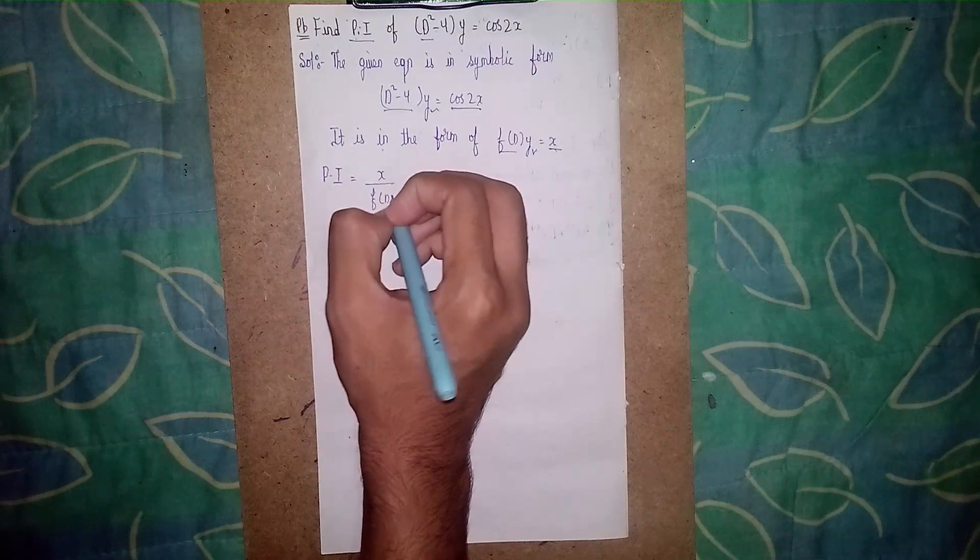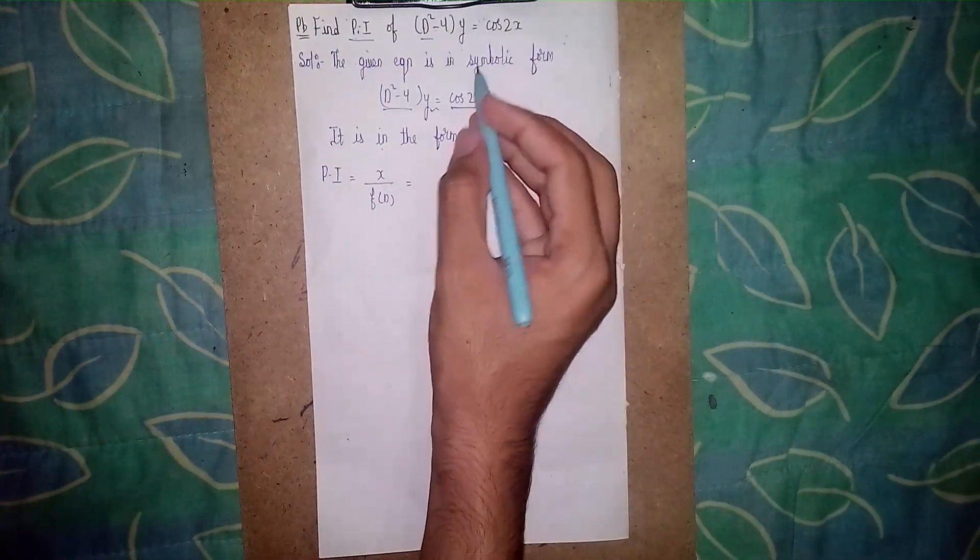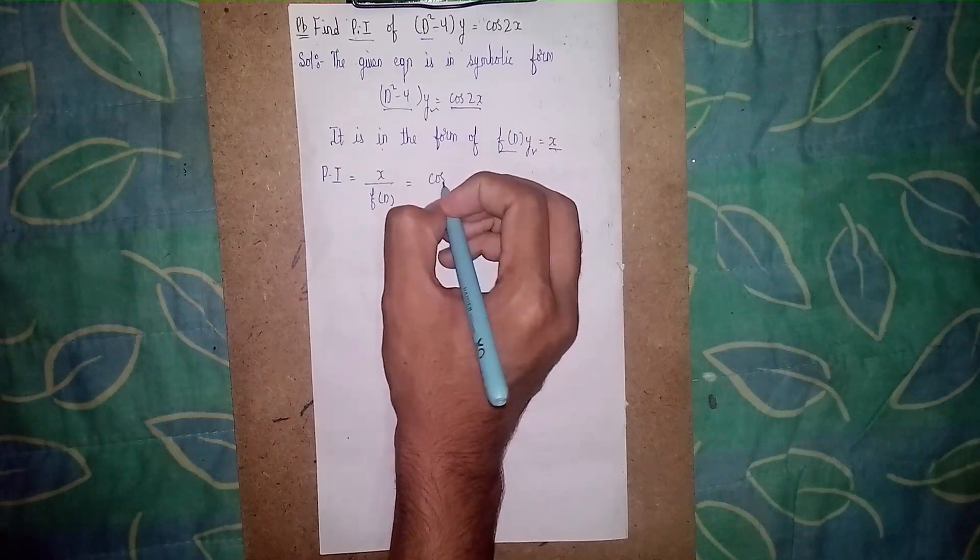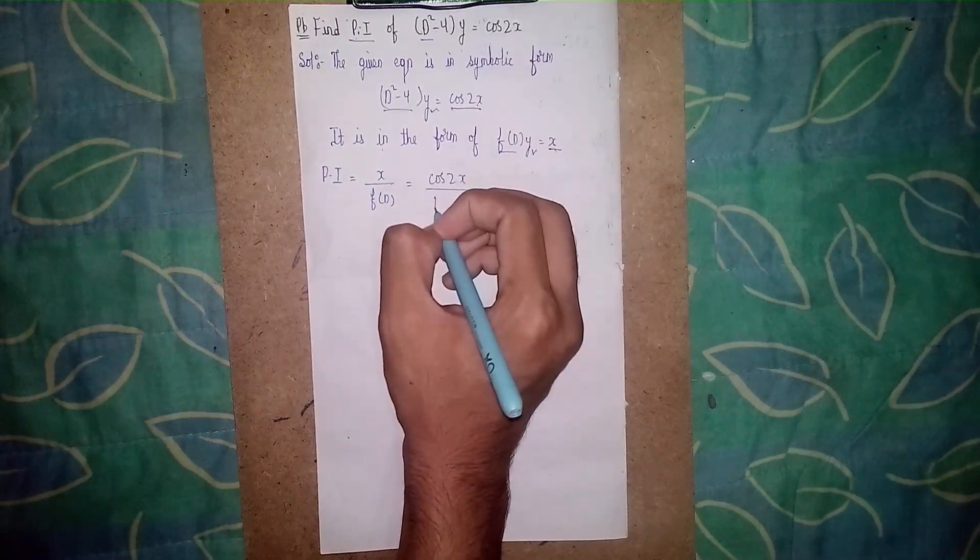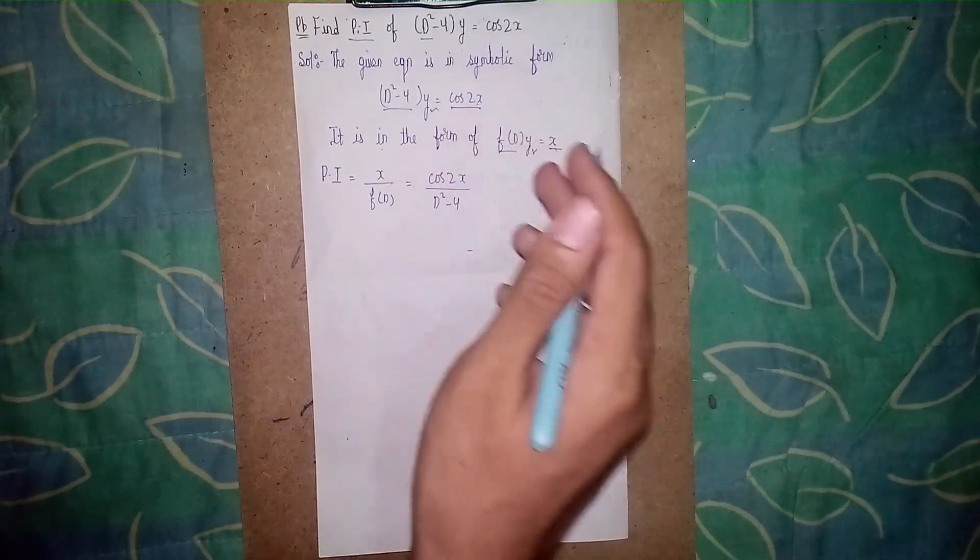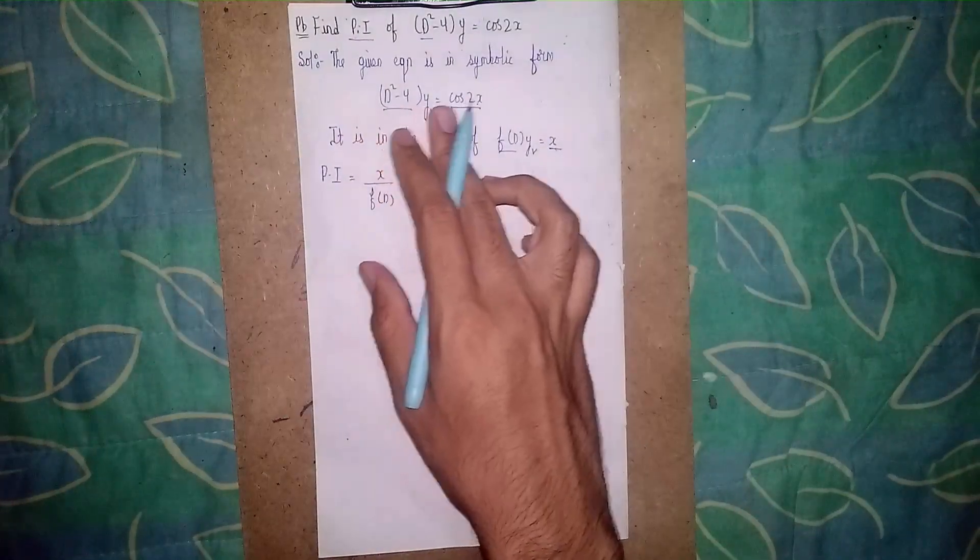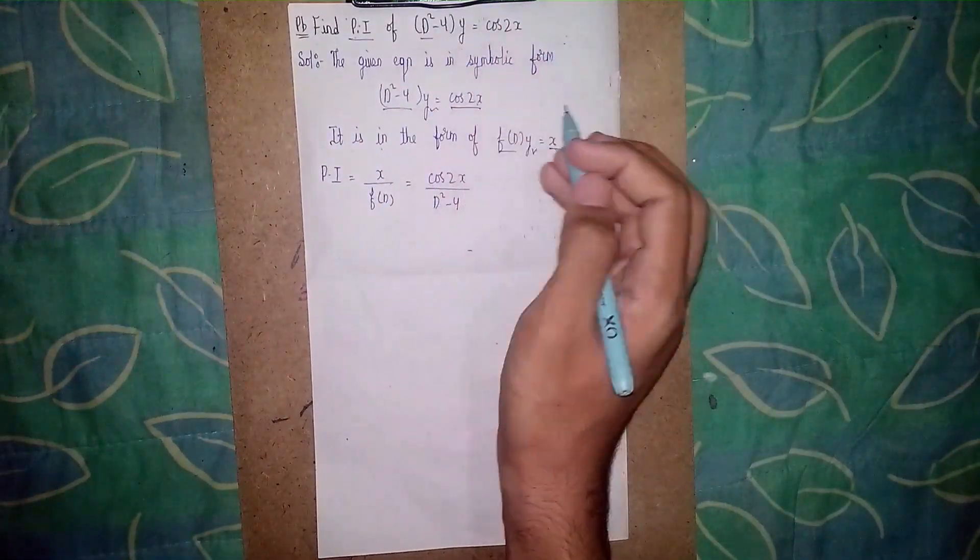Now in the working rule, when you saw the working rule of this non-homogeneous linear differential equation, when the trigonometric function is given, you have to put f(D) equal to minus f of minus a². Okay, instead of D you have to do minus a².